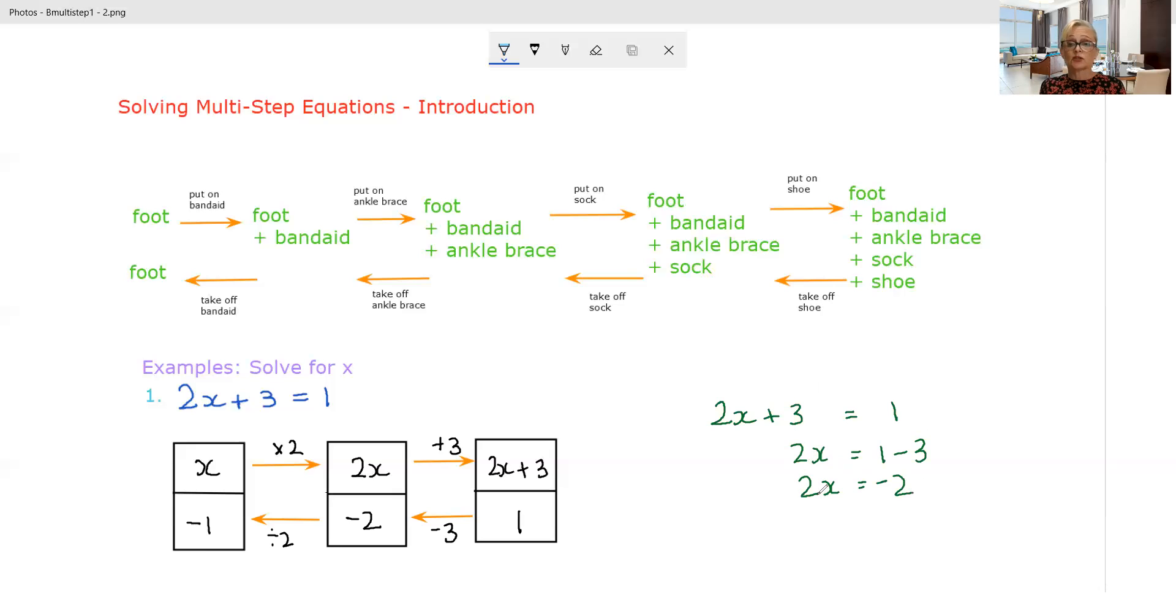Then we've only got one more layer to remove. 2x means 2 times x. So to undo the timesing by 2, multiplication by 2, we're going to divide by 2. Now what we're going to do is we're going to do a few more.